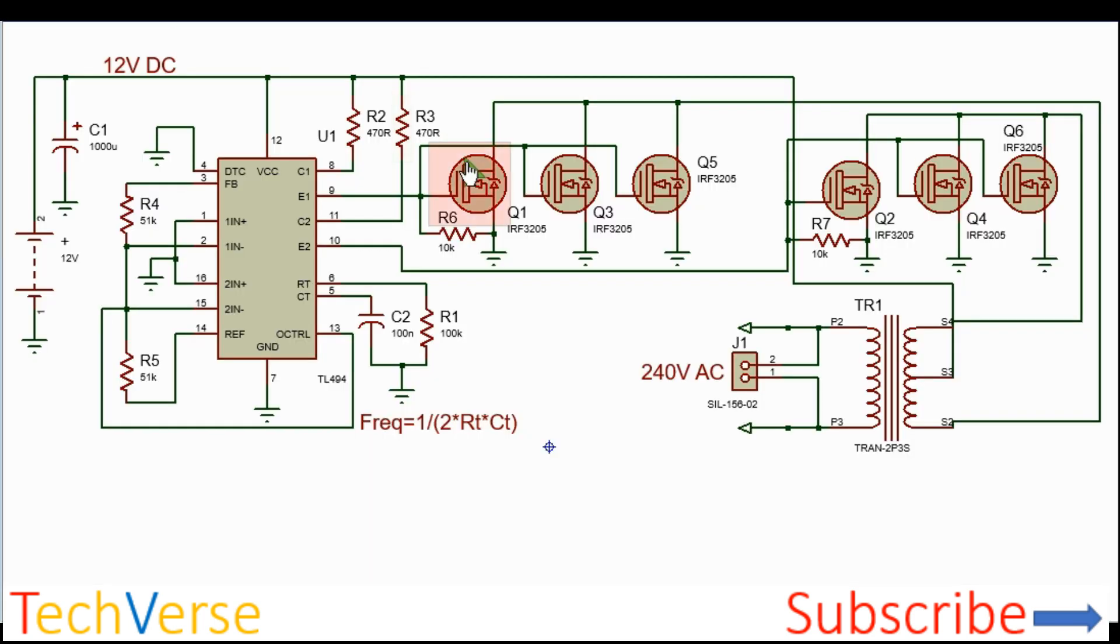So the working of the project is rather simple. The IC operates in push-pull. So connect everything as per the schematics. Connect pin 4 deadtime to ground. Feed back pin 3 to pin 2. Connect the non-inverting terminals of the error amplifiers to ground. Connect the inverting terminals to 5 volts generated by pin 14, the reference pin.